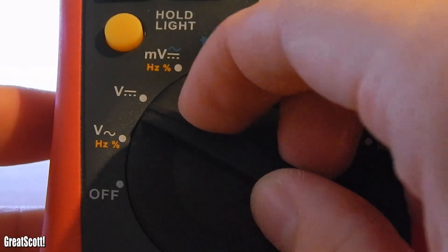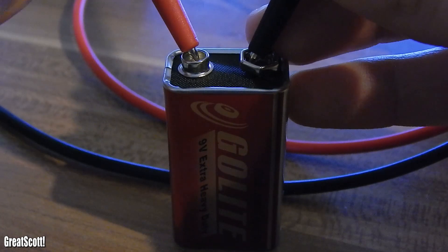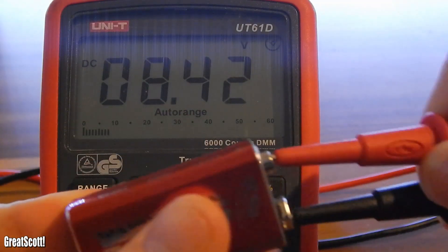We measure voltage in parallel. So connect the red probe to the positive side and the black probe to the negative side of your power source. Good way to find out whether your batteries are still useful.